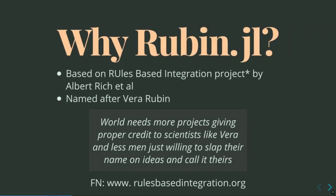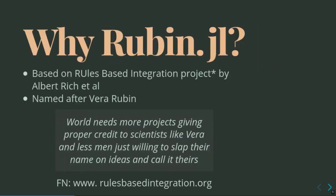So why is it called Ruben.jl? It's based on previous work by Albert Rich et al. on the rules-based integration project, and it's named after the physicist Vera Rubin. Why? Because she was overlooked and never given credit for many of her discoveries, and I think the world needs more projects giving proper credit to scientists like Vera, and less of egotistical men who are just willing to slap their name on ideas and shoulder everyone else out of the space.